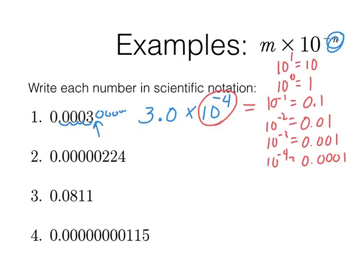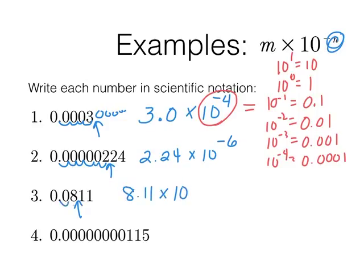More examples with small numbers: for 0.00000224, the first non-zero digit is 2, giving 2.24. We count 1, 2, 3, 4, 5, 6 spaces, so it's 2.24 times 10 to the negative 6. For 0.0811: first non-zero digit gives 8.11 times 10 to the negative 2. For 0.00000000115: count 9 places — 1.15 times 10 to the negative 9th. These negative exponents are required because these numbers are very small.